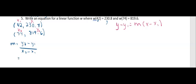So substituting everything in, y2 we have is 819.6 minus y1, we labeled that one for 230.8, all over x2 we have is 74 and x1 we have is 42. If we do our subtraction, this works out to be 588.8 on the top and 74 minus 42 is 32 on the bottom. And that will give us a slope of 18.4.